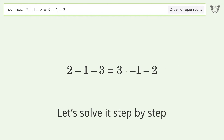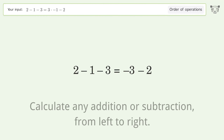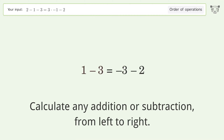Let's solve it step by step. Perform any multiplication or division from left to right: 3 times negative 1 equals negative 3. Then calculate any addition or subtraction from left to right: 2 minus 1 equals 1, and 1 minus 3 equals negative 2.